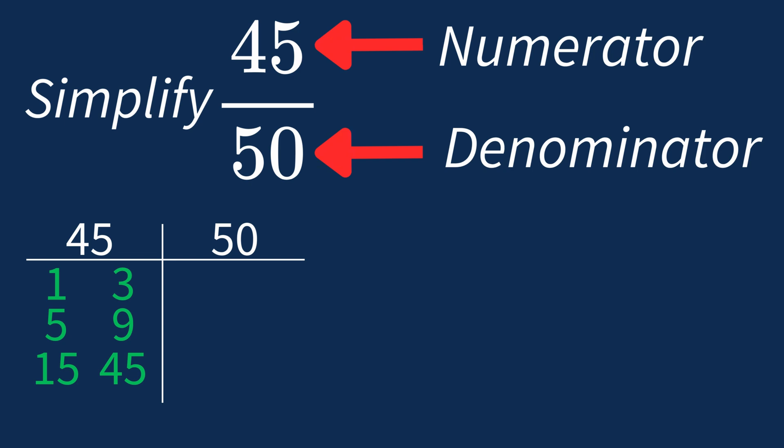For 50, the factors are 1, 2, 5, 10, 25, and 50.